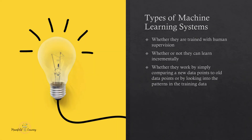Now let's look at the types of machine learning systems. We can classify machine learning systems on the basis of many things: whether they are trained with human supervision or not, whether they can learn incrementally or not, whether they work by comparing new data points to old data points, or whether they can generalize from data. Let's look at some of the important classifications based on the examples on the slide.